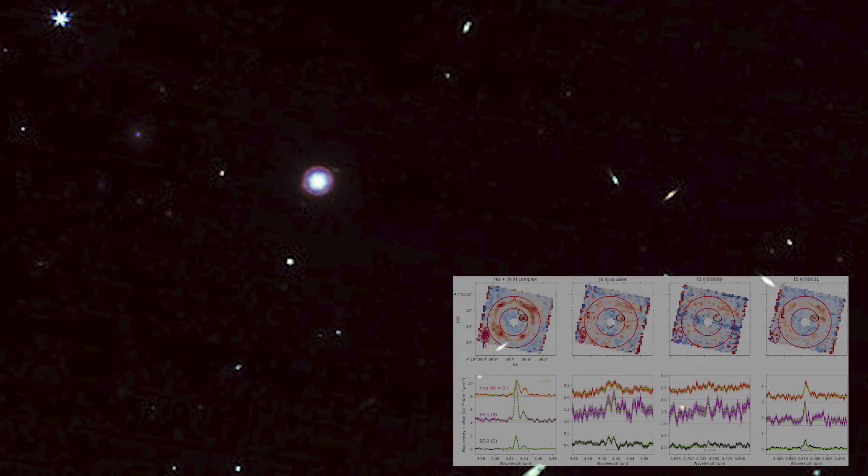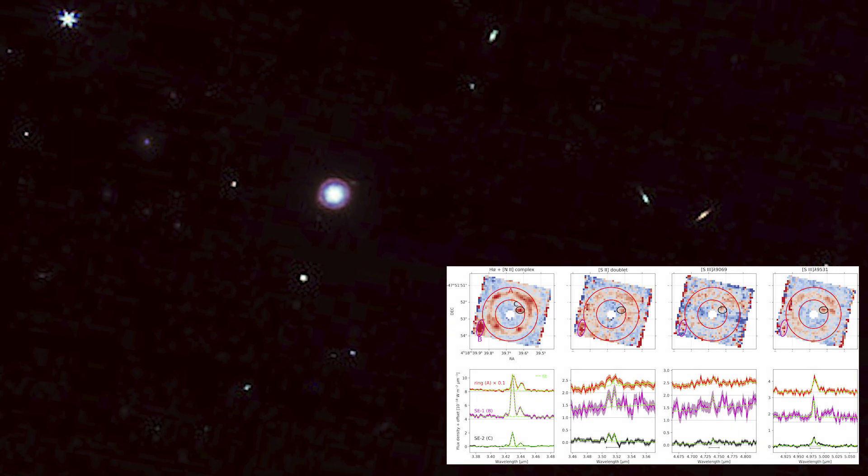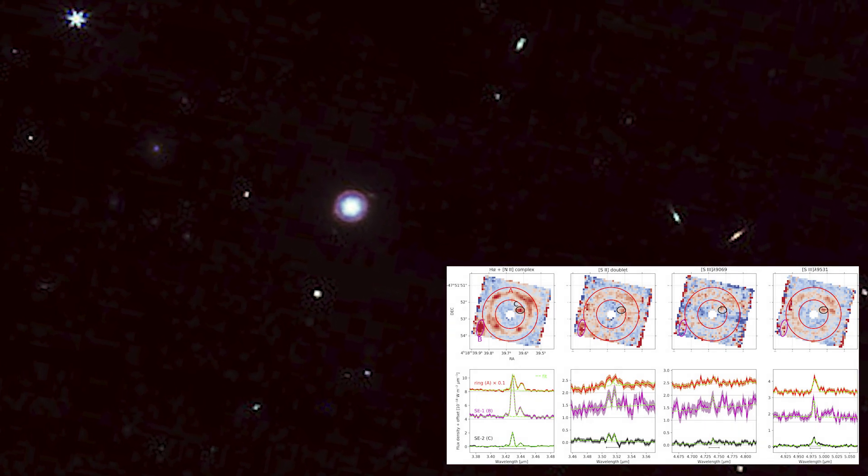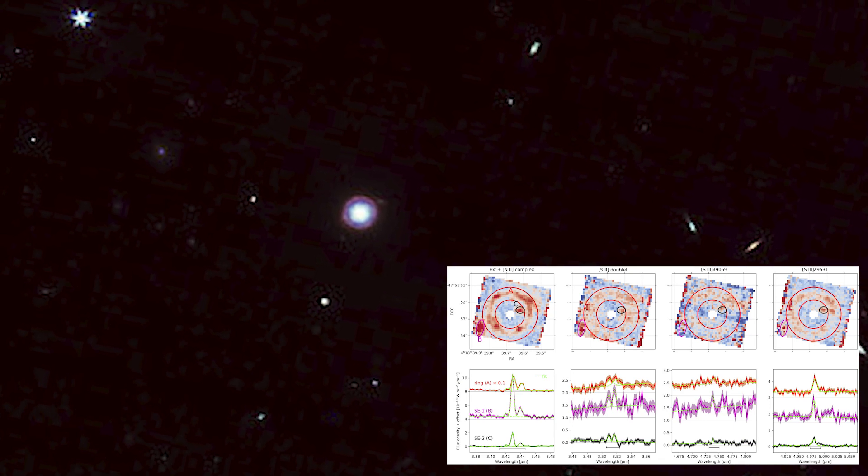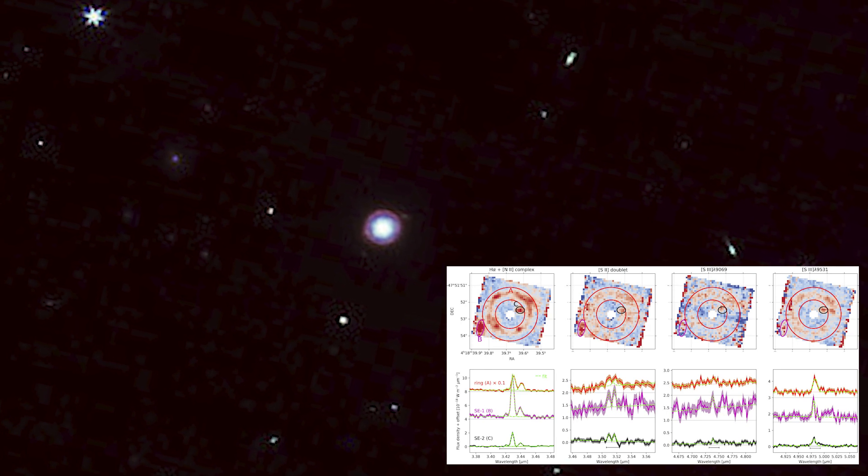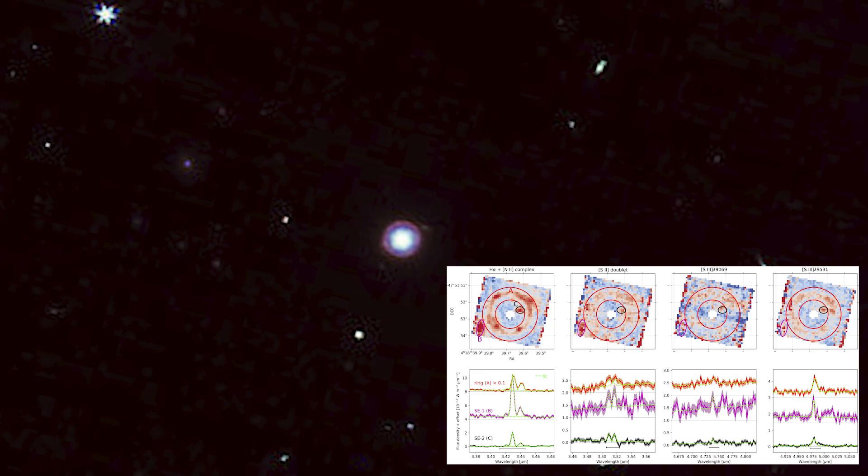Further analysis of the data confirmed that the two galaxies were the same distance from Earth, calculated as a redshift of about 4.2, and were located within 5 kiloparsecs of each other. This proximity suggests that they are bound to interact with each other, potentially merging, providing insight into how early galaxies evolved into larger ones.